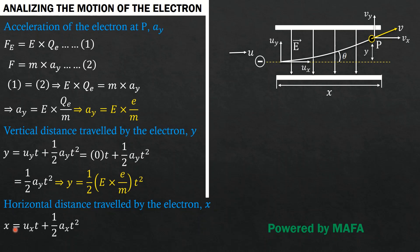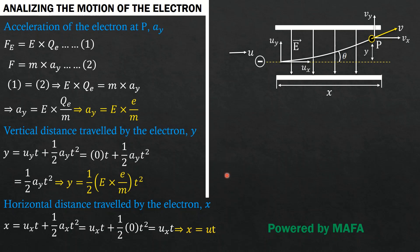For the horizontal distance x, we use the equation x = u_x·t + ½·a_x·t². Since there is no horizontal acceleration, a_x = 0, giving x = u_x·t. Since u_x = u, we get x = u·t, where t is the time taken to cover the horizontal distance.